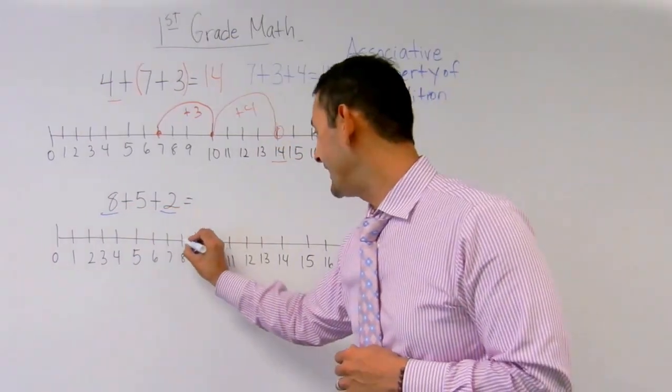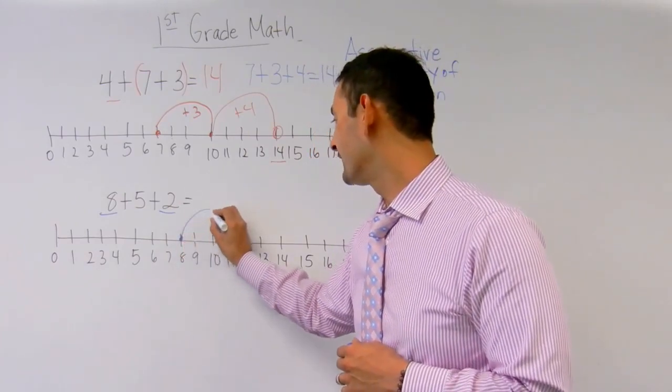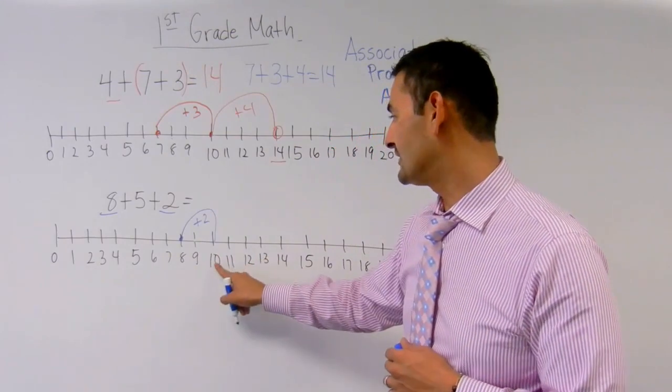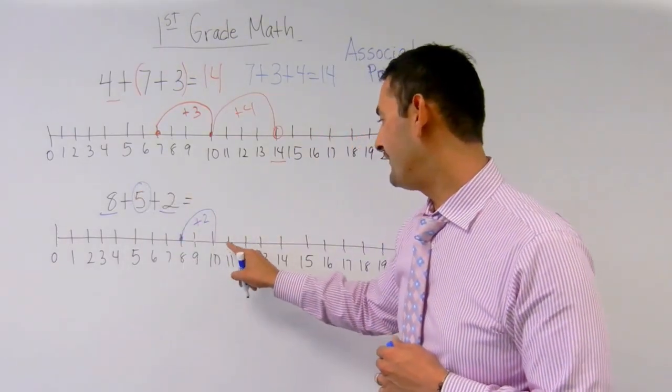So I'm going to start with the 8 on my number line and I'm going to jump 2. 1, 2. So from here to here, plus 2, that equals 10. Now I've got this 5 right here, so I'm going to jump 5 more.